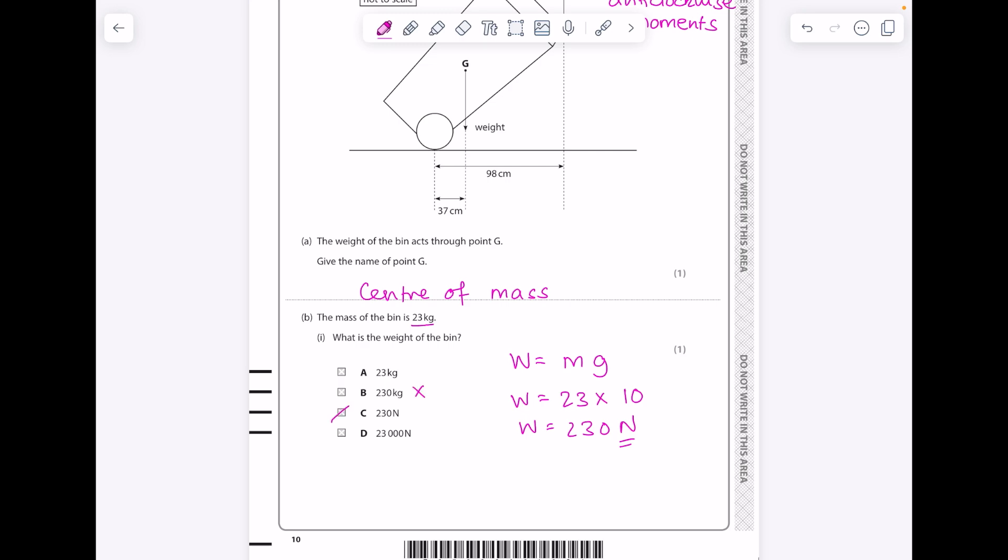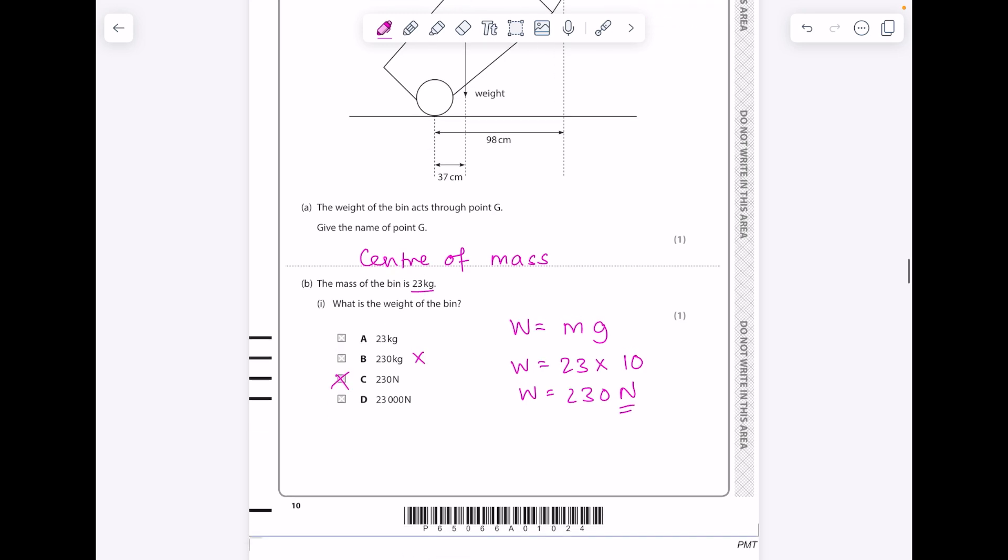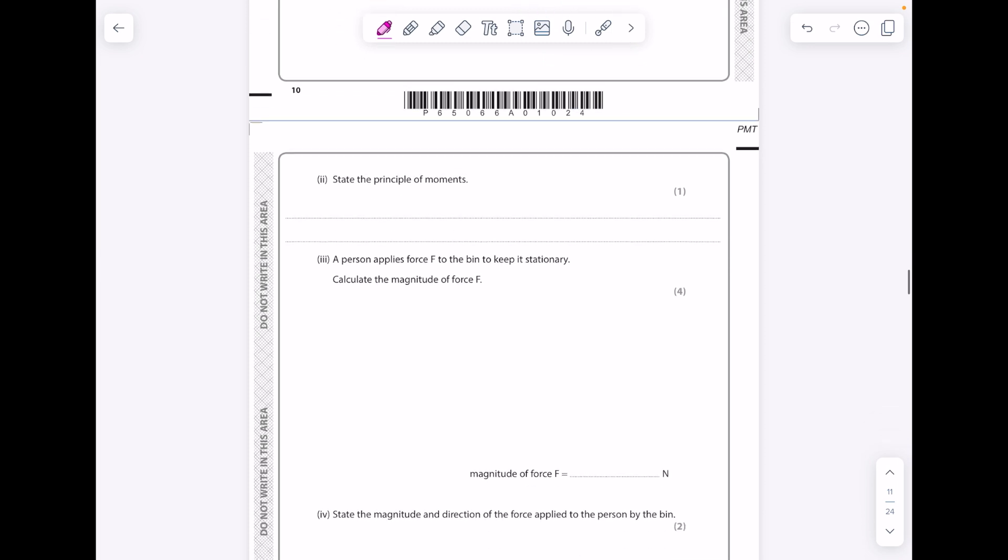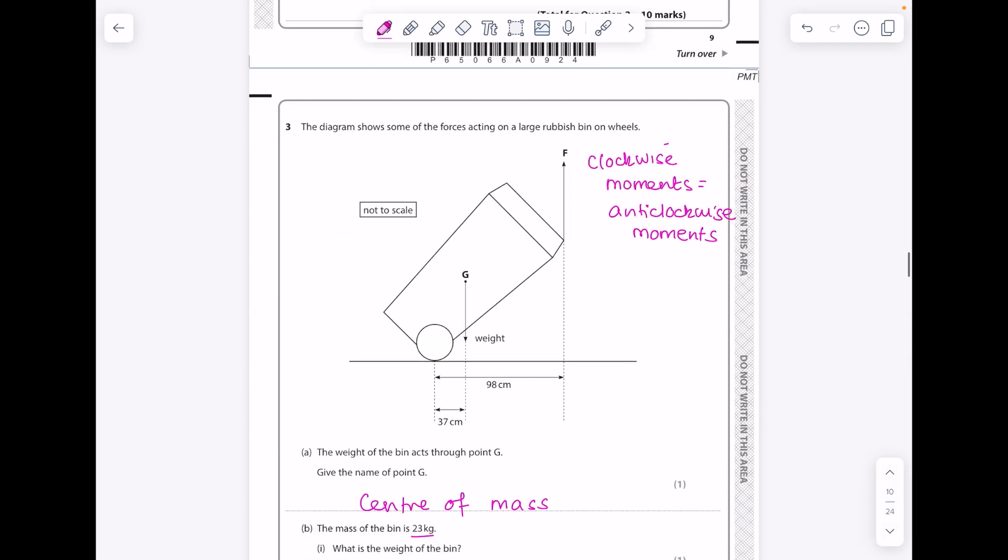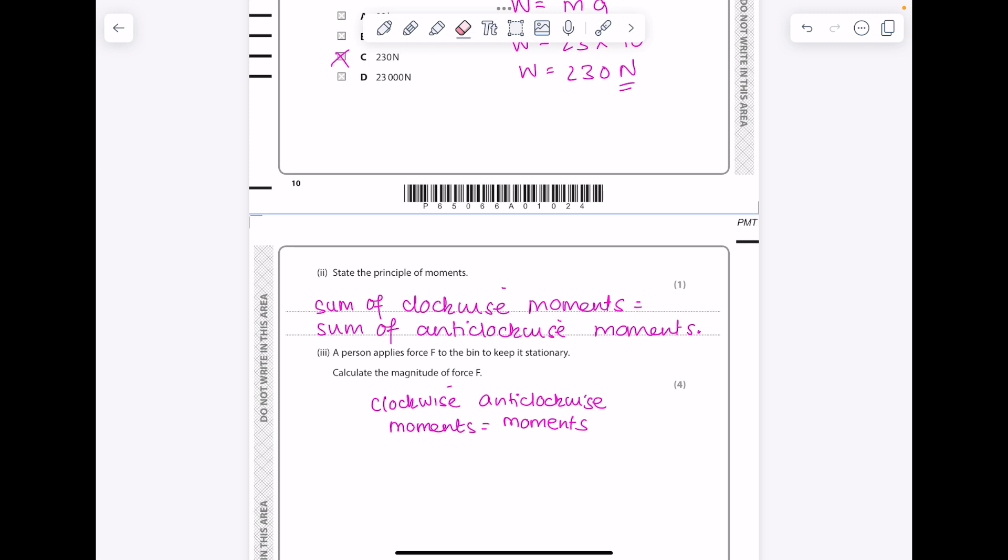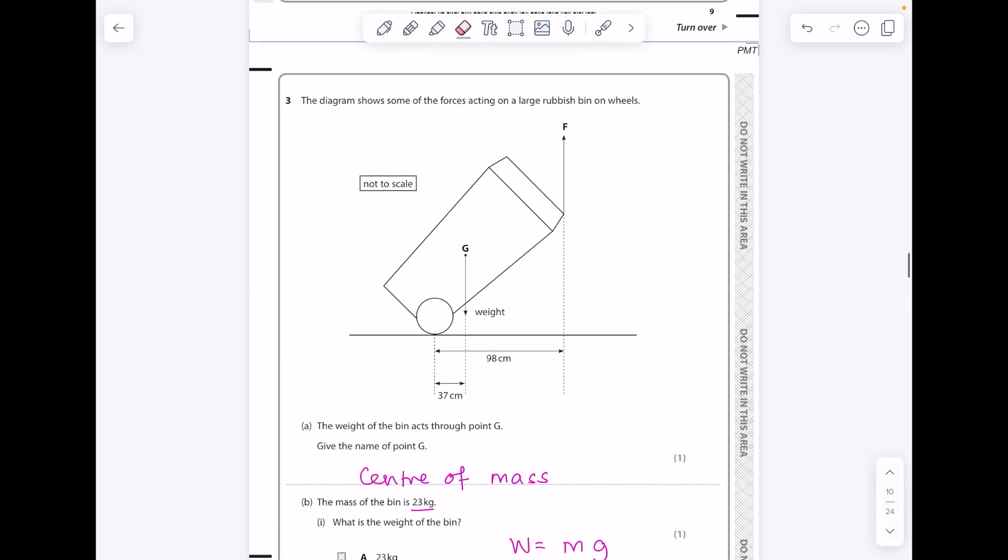It's important that you're aware that the unit of weight is newtons, so don't be tempted to pick that one. The answer here is C, 230 newtons. State the principle of moments - there it is, the sum of the clockwise moments equals the sum of the anti-clockwise moments. A person applies force F to the bin to keep it stationary. Calculate the magnitude of force F, four marks. Do not stress about this, we're going to use the principle of moments to solve this.